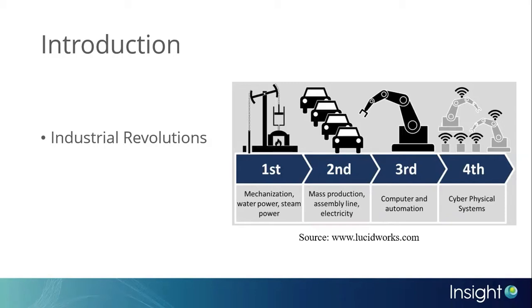The second revolution embraced the idea of mass production and used assembly lines powered by electricity. Computers and controllers formed the third revolution.